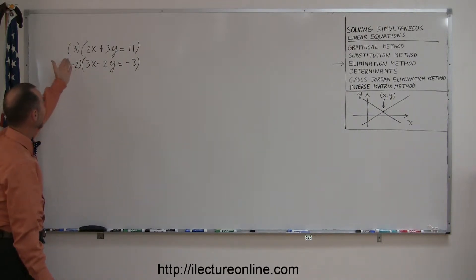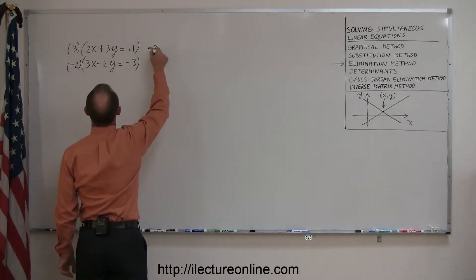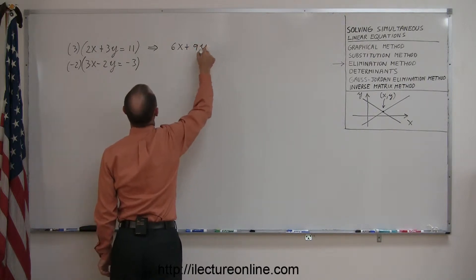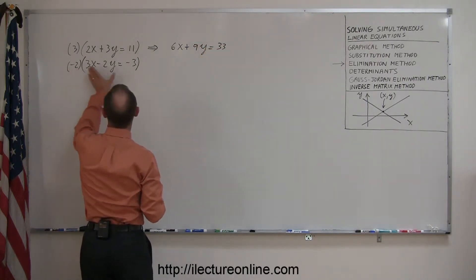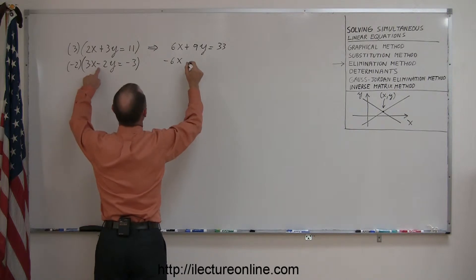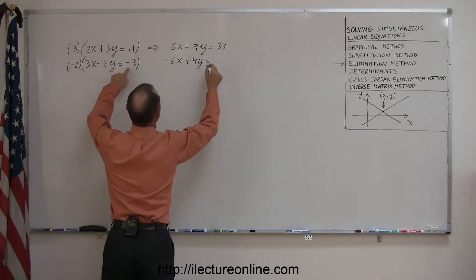Multiplying everything on both sides of the equation by 3 for the top equation, I get 6x plus 9y equals 33. In the bottom equation, multiply both sides by negative 2, so I end up with minus 6x. Negative 2 times negative 2 is plus 4y equals negative 2 times negative 3 is positive 6.